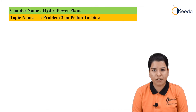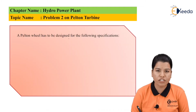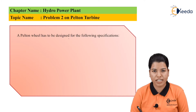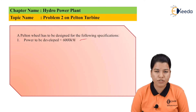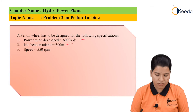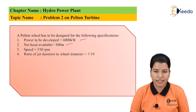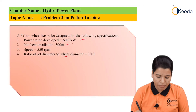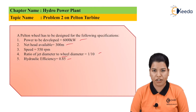Problem 2 based on the Pelton turbine can be stated as: a Pelton wheel is designed for the following specifications. First, power to be developed is equal to 6000 kilowatt. Second, net head available is 300 meter. Third, speed is 550 rpm. Then, the ratio of jet diameter to wheel diameter is 1 by 10.